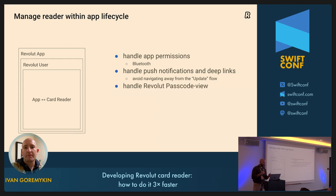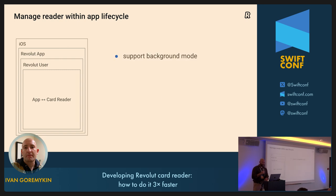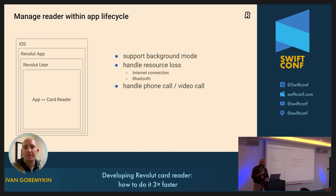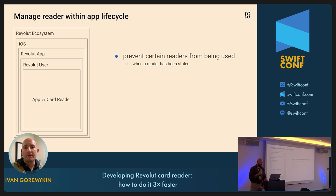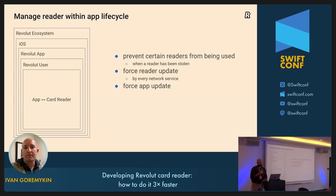We need to handle the Revolut passcode view — a view displayed on top of the app when the app is idle — and make sure the UI behind it is correctly updated. On the iOS level we need to support background mode, so that reader updates carry on when the app goes to background. We need to handle resource loss like internet connection and Bluetooth, and handle phone and video calls. At the Revolut ecosystem level, we need to prevent certain readers from being used — for example if a reader has been stolen. We want to force reader updates when something new is released, and every network service will reject your reader if it's not up to date. We also want to force app updates when there's a critical new version in the App Store.